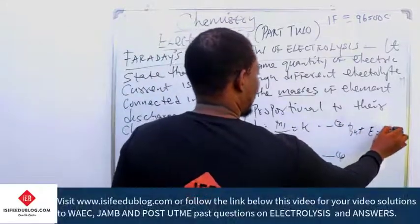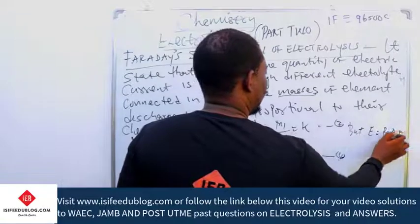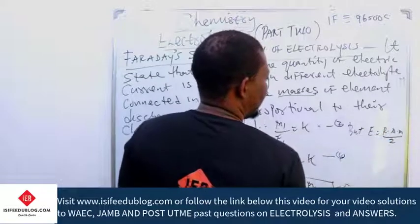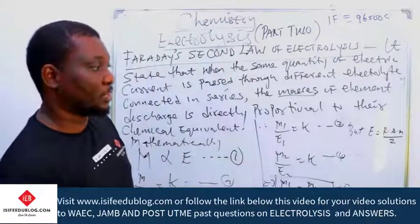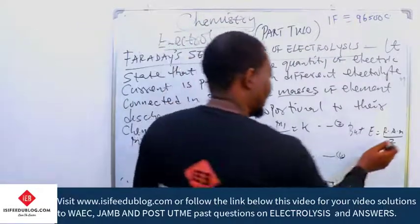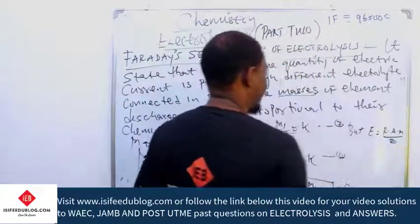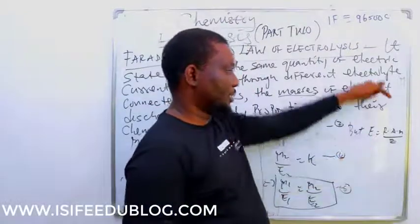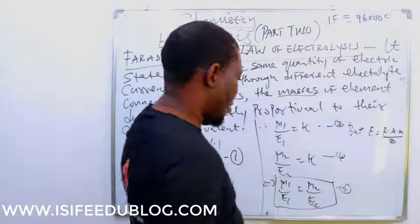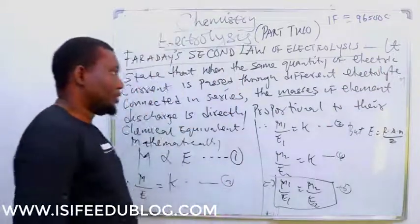E is equal to RAM over Z. You already know what RAM is from the first law. Relative atomic mass of elements over Z. Z means charge or valence. You will always know that it is the mass of the elements over the charge of the elements.